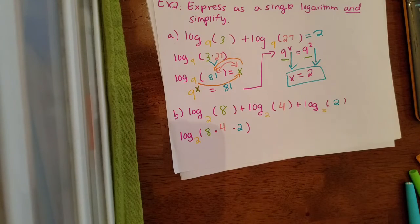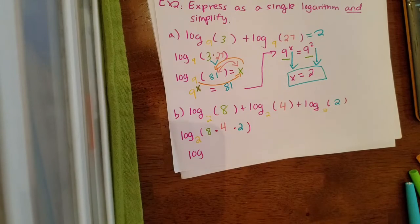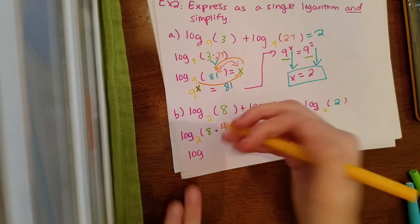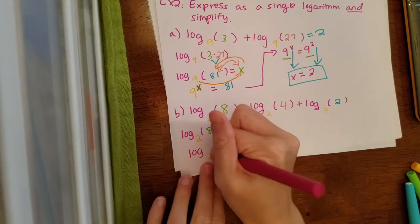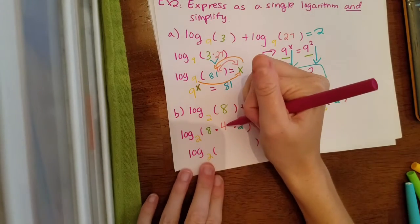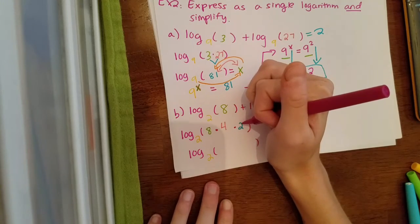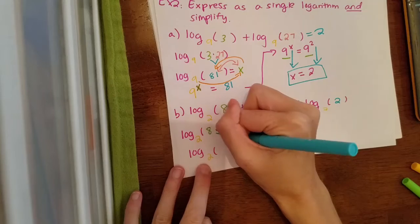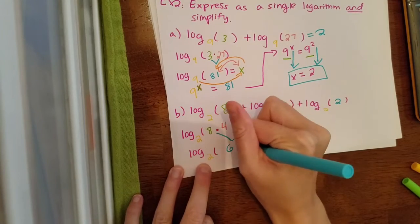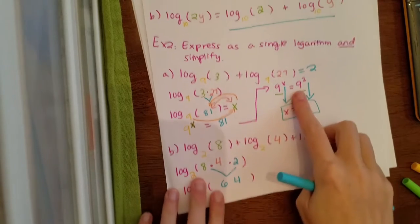So we have log base 2 of 8 times 4 times 2. Let's simplify: 8 times 4 is 32, and 32 times 2 is 64. So all three multiplied together gives us 64, and this becomes log base 2 of 64.